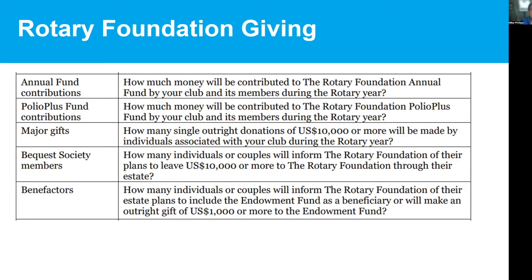The next category has five goals in the Rotary Foundation giving group: annual fund, polio, major gifts — basically all the major categories for Rotarians to contribute to the foundation. Goals can be set for each of these for your club. Many of them get updated by Rotary — certainly the annual fund and the polio fund are automatically updated, so the achievement toward accomplishing the goal gets set up for you. Any questions?